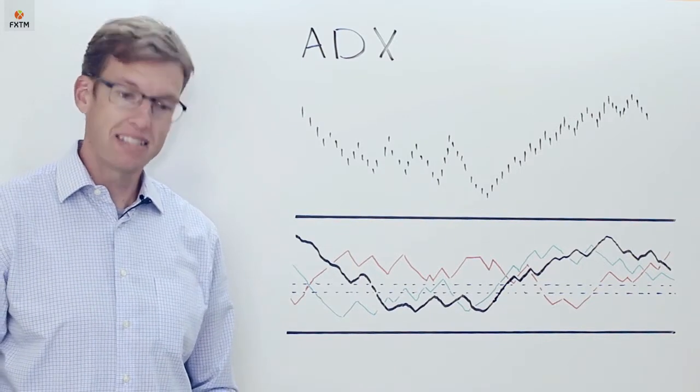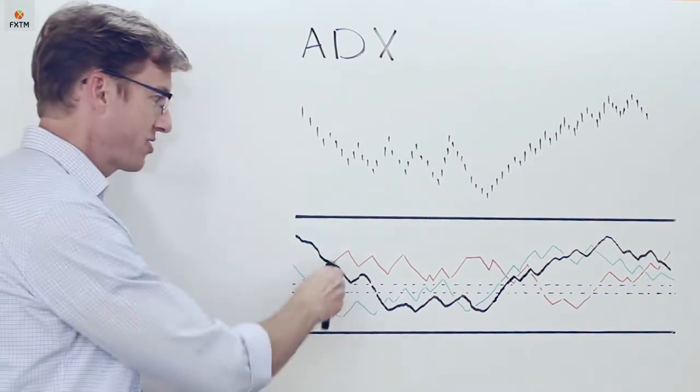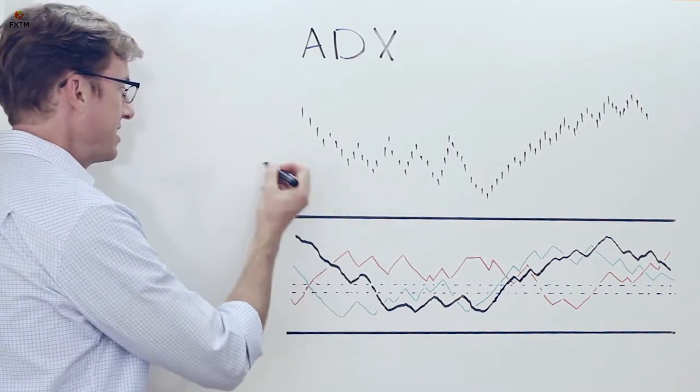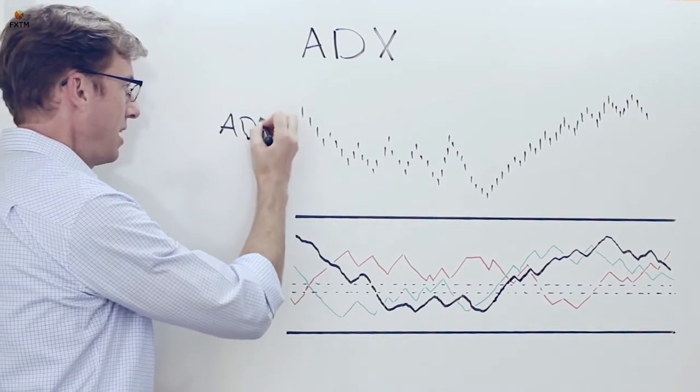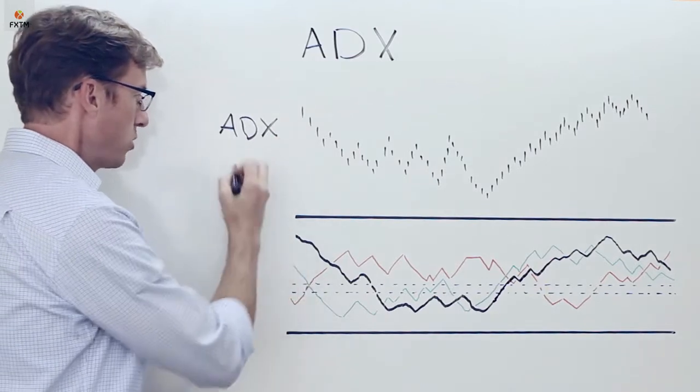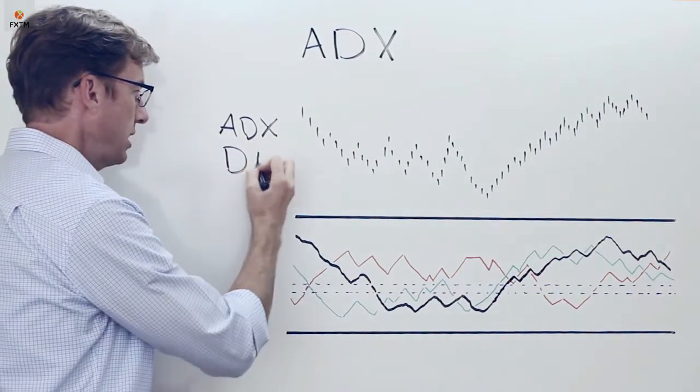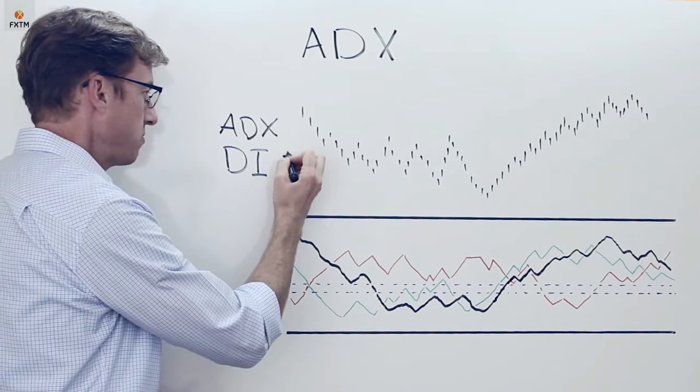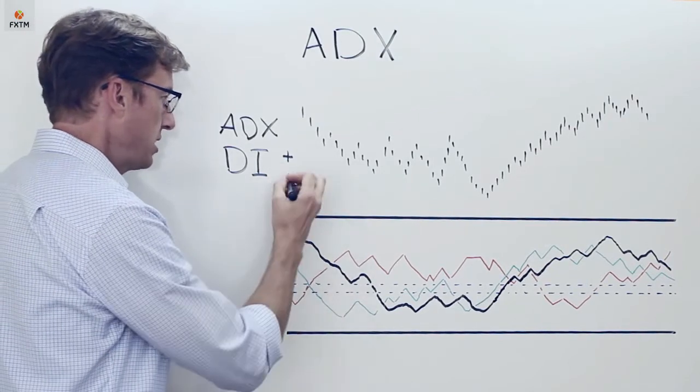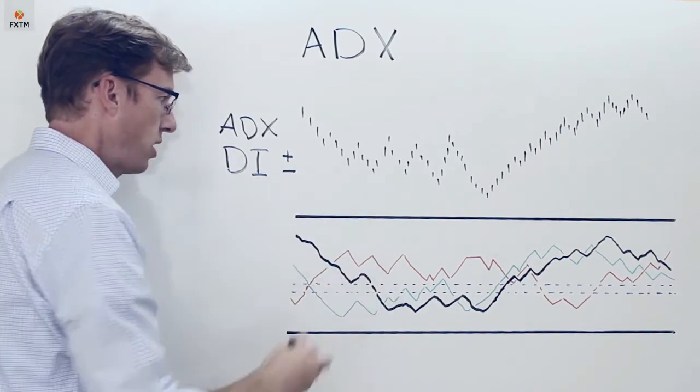Now it consists of basically three lines, which you can see here drawn on my chart. The first one is the ADX itself, and then there are two others which we call directional indicators. There's a positive version, which I've drawn as green, and a negative version, which I've drawn as red.